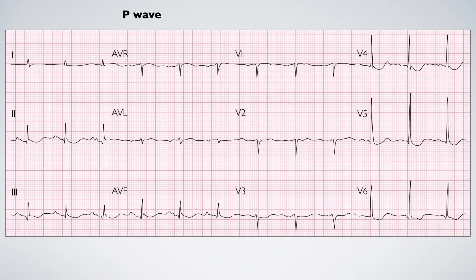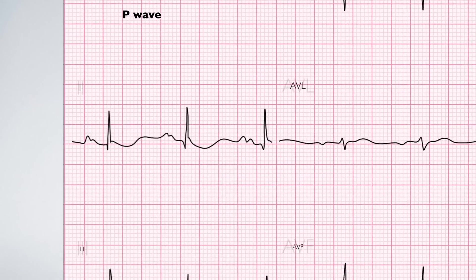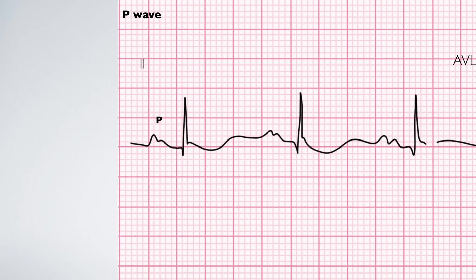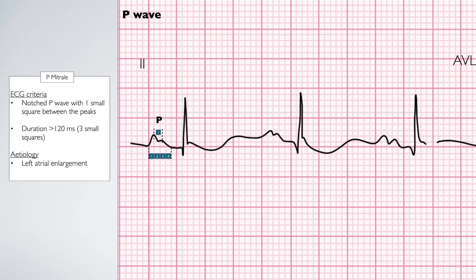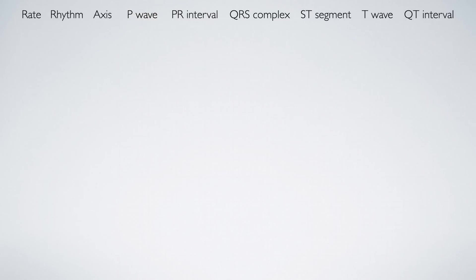The second presentation is P-mitrale. This is caused by left atrial enlargement and presents with a P-wave that has two notches separated by one small square, and the P-wave has a total duration of greater than 3 small squares wide.